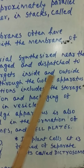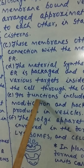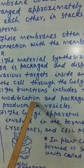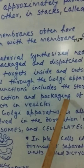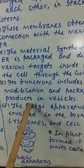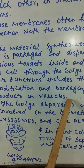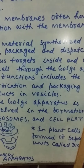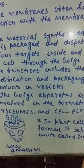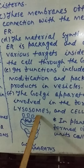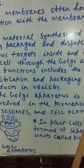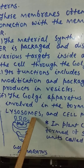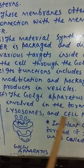Its functions include the storage, modification, and packaging of products in vesicles. The Golgi apparatus is also involved in the formation of lysosomes and cell plates. We will discuss lysosomes and cell plates in the next class.